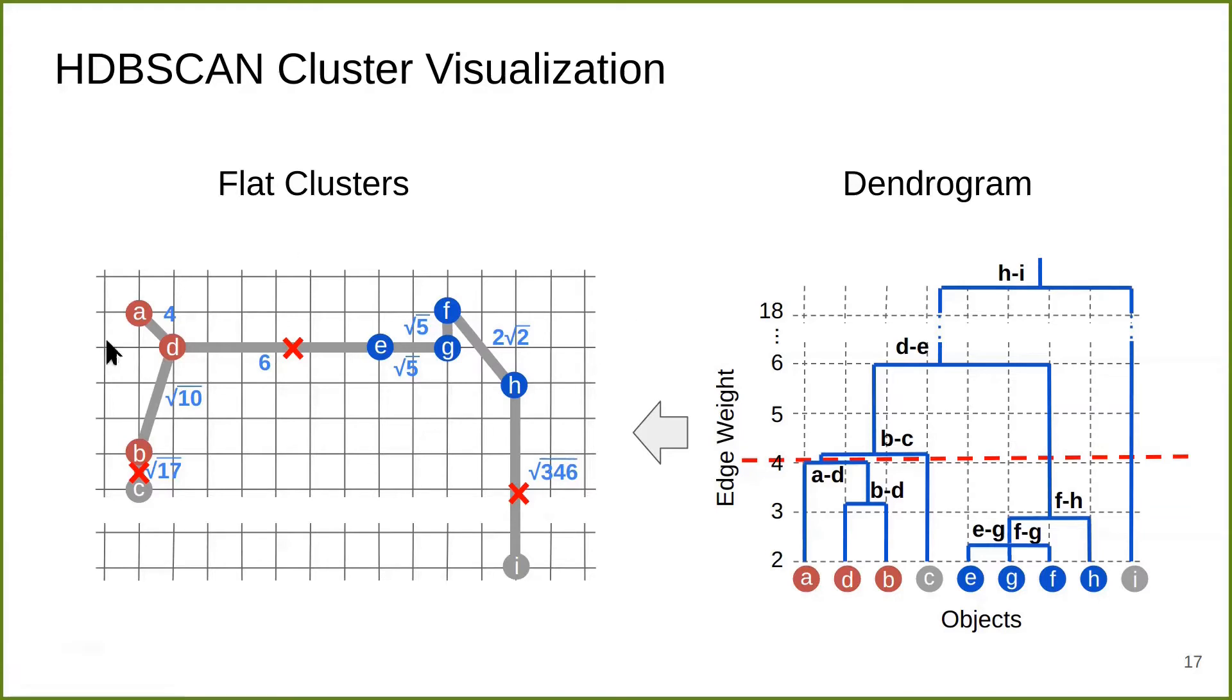We do so by discarding all the nodes that are above 4 and look at the remaining subtree, which corresponds to clusters. Correspondingly, on the MST, this is equivalent to discarding the edges with weight larger than 4 and looking at the remaining connected components. This gives us a flat cluster which resembles DBSCAN.